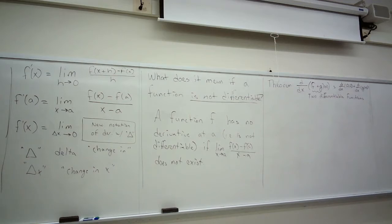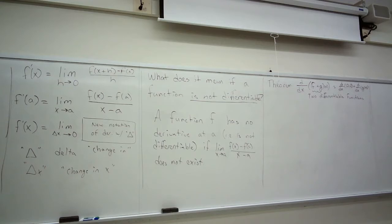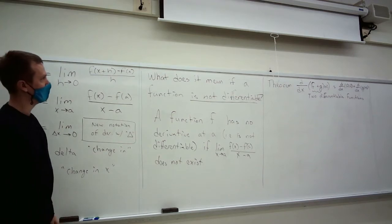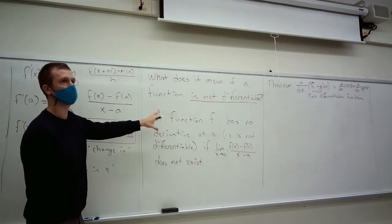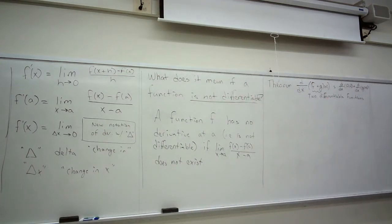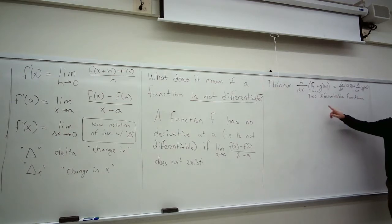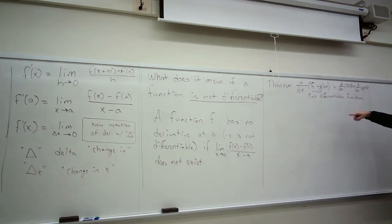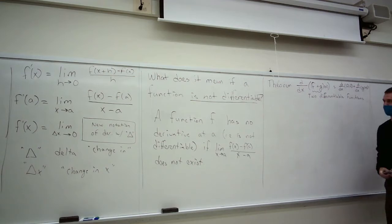We've only worked with nice, smooth functions so far — functions you can easily find the slope of, where the secant line process gives a very patterned result. But there's a whole multitude of functions where that's not the case. For example, sine of 1 over X. You can think of any limit that does not exist and fit a function to that — you'll get something non-differentiable there.